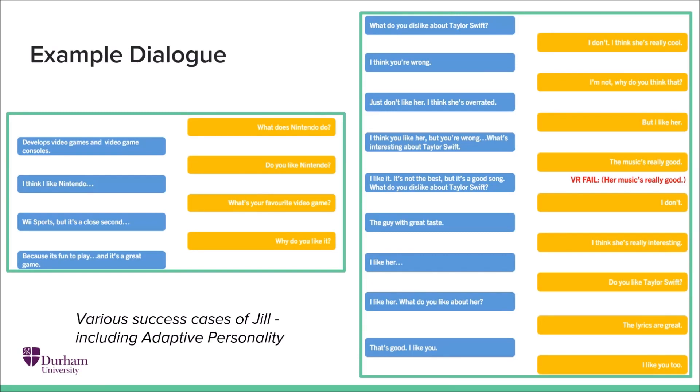On the left, we can see some interesting responses from Jill. Jill actually speaks about things related to Nintendo, but wasn't explicitly in the summarization, such as Wii Sports here. And we can see that DialoGPT makes links between these topics when generating a response.